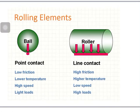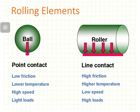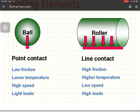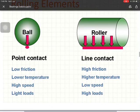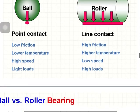In ball bearings there is a point contact between the ball and the raceway. Due to this point contact, friction and temperature are lower, so ball bearings are generally used in high-speed, light-load applications. In roller bearings the contact is a line contact — surface to surface. Due to line contact, friction and temperature are higher, so roller bearings are used in low-speed, high-load applications.